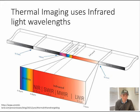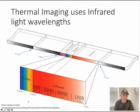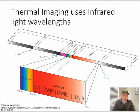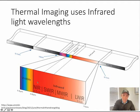Thermal imaging uses infrared light wavelengths. We're all familiar with visible light — Roy G. Biv: red, orange, yellow, green, blue, indigo, and violet. This is our visible spectrum. Thermal imaging uses infrared wavelengths — it's still light, still radiation that could come from the sun. But these are longer wavelengths that people feel as heat. We don't see infrared, we feel it on our bodies. There's a whole range of infrared wavelengths, just like there is for visible light.